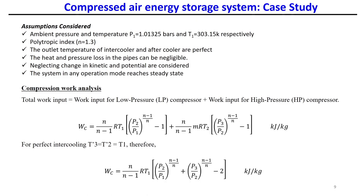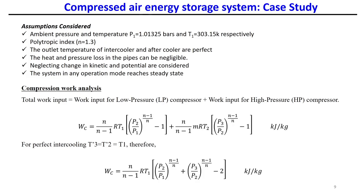Now let us take a case study on a compressed air energy storage (CAES) system. Assumptions: ambient pressure is atmospheric and temperature is 303.15 K; polytropic index n = 1.3; outlet temperatures of the intercooler and aftercooler are perfect; heat and pressure losses in pipes are neglected; changes in kinetic and potential energy are neglected; and the system reaches steady state in any operation mode.